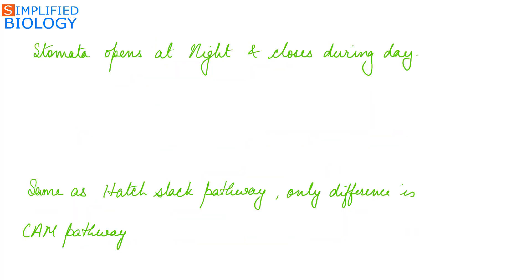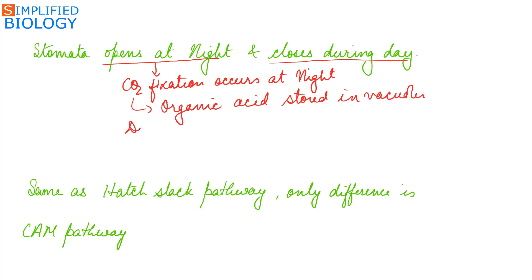In these plants, stomata opens at night and closes during day, that means carbon dioxide fixation occurs at night. The carbon dioxide is fixed in the form of organic acids that are stored in vacuoles.